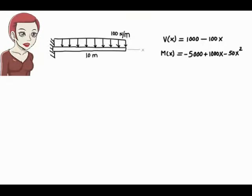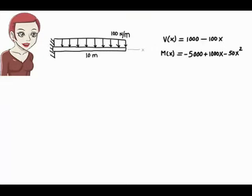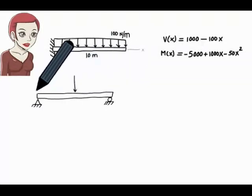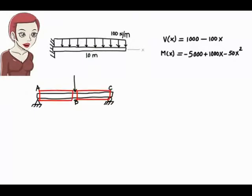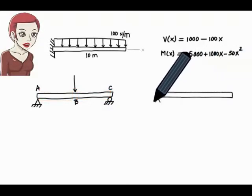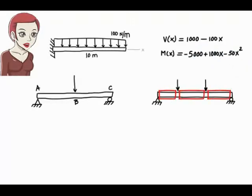In most cases, it may not be possible to write down only one equation for shear or moment for the entire beam. Rather, it would be necessary to write multiple equations, one for each beam segment. This happens when the beam is subjected to one or more concentrated loads. For example, with a concentrated load at B, since the load divides the beam into two segments, we need two equations for shear and two equations for moment. Here, three pairs of equations are needed since the concentrated loads divide the beam into three segments.